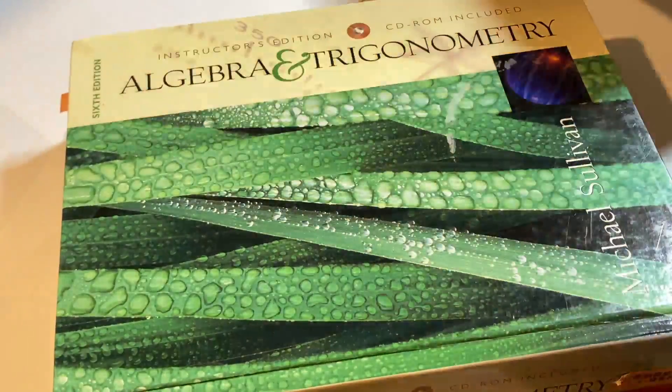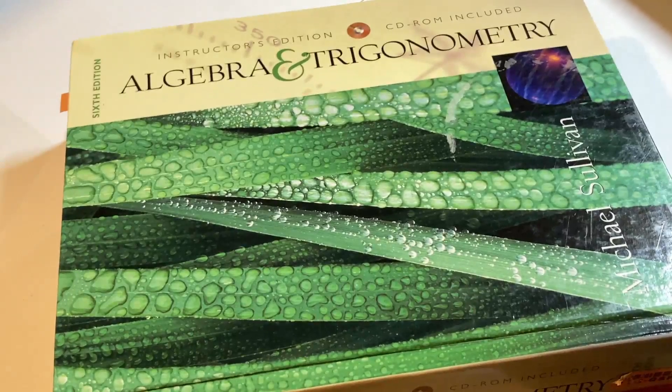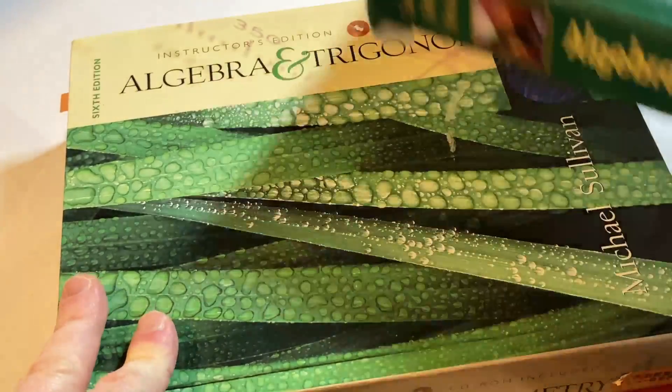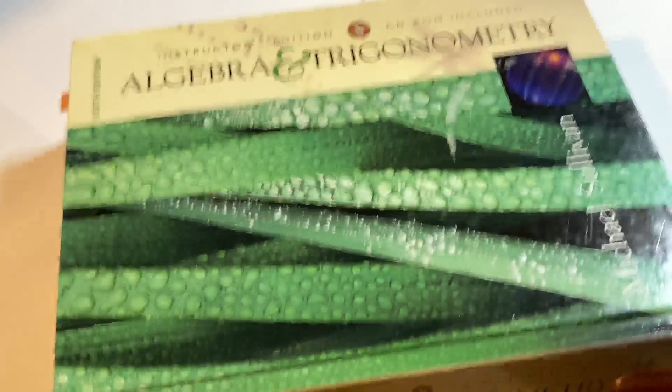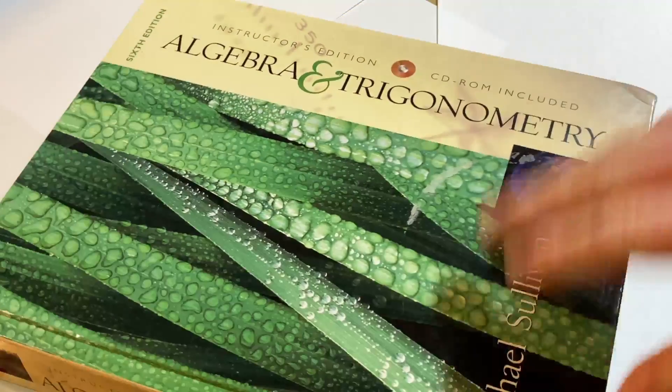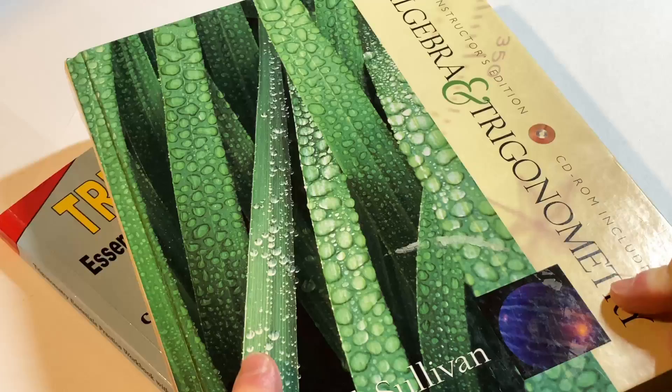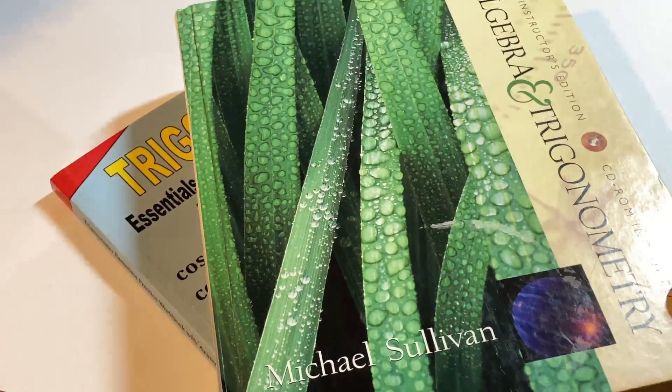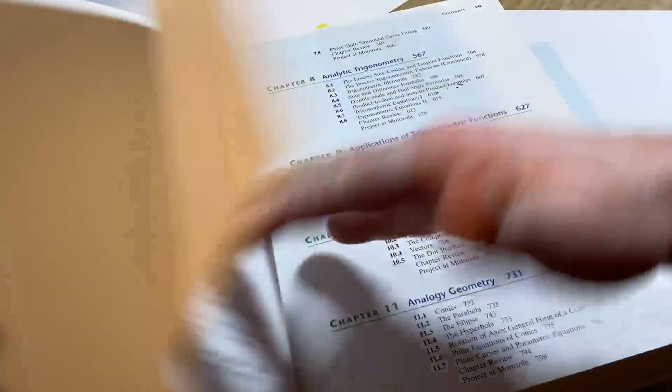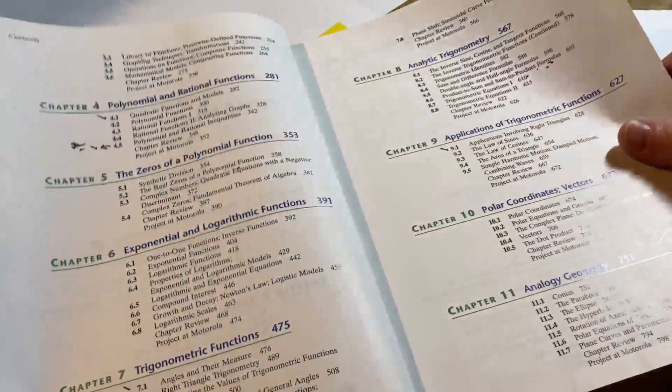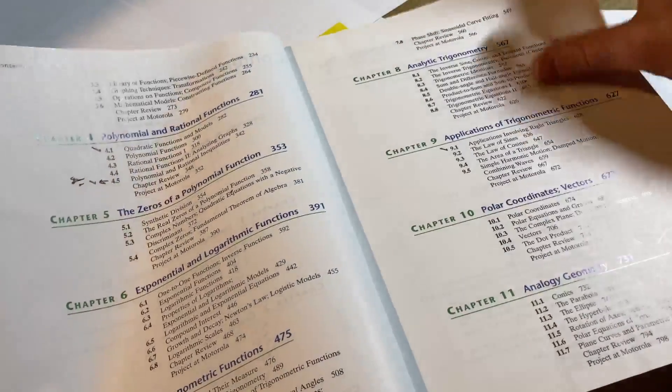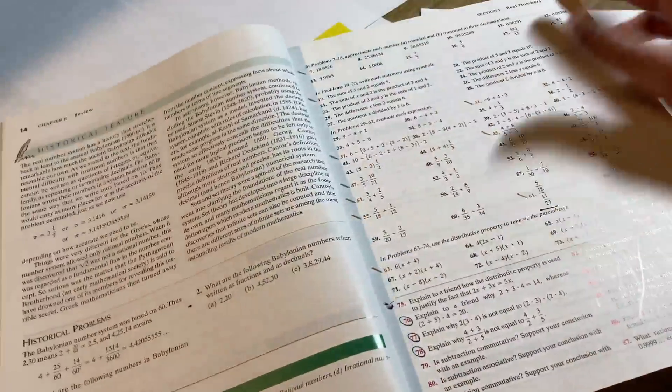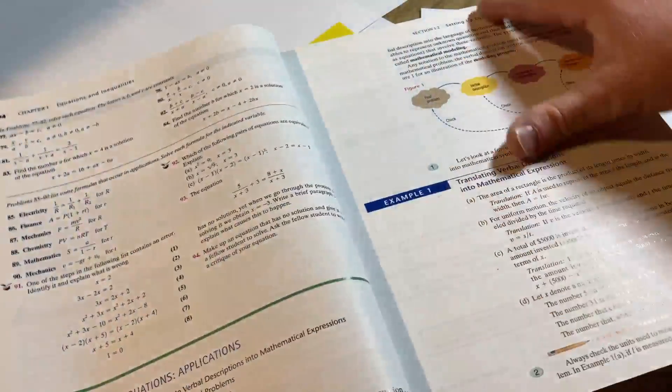Here's an example of another good book. This book here is a book that I bought used. It's an instructor's edition of Algebra and Trigonometry by Michael Sullivan. I got this used a long time ago on the internet somewhere. It has the same stuff that the Stewart book has, just different examples and slightly different exercises.